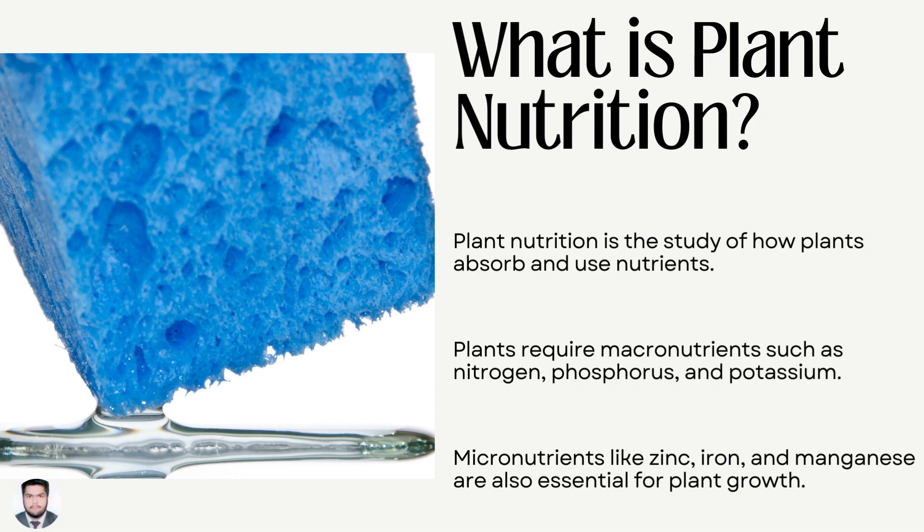What is plant nutrition? Plant nutrition is the study of how plants absorb and use nutrients. Plants require macronutrients such as nitrogen, phosphorus and potassium. Micronutrients like zinc, iron and manganese are also essential for plant growth.